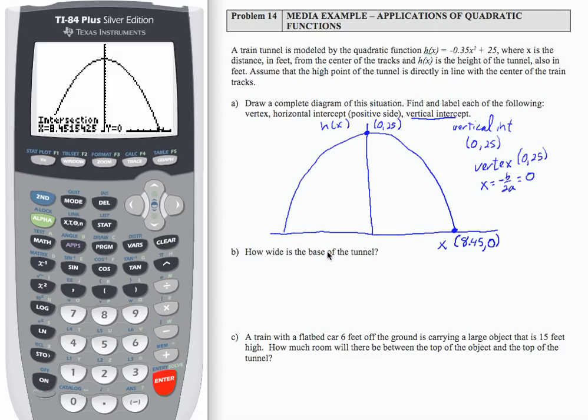To find the width, how wide is the base of the tunnel? Well, the tunnel goes from here to here. So all I'm going to do is take 2 times 8.45, which is 16.9 feet. So the tunnel is 16.9 feet wide.